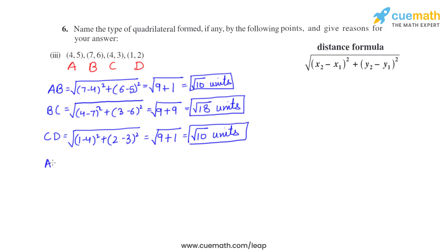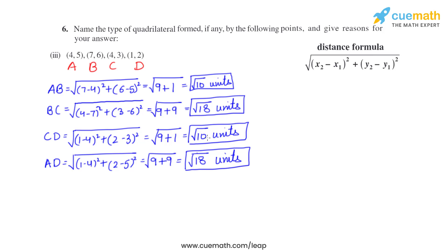For AD: (1 minus 4) whole square plus (2 minus 5) whole square = (−3)² + (−3)² = 9 + 9 = 18, so AD = √18 units. We have two pairs of equal sides: AB = CD and BC = AD. This means it could be a rectangle or a parallelogram. We need to check if the diagonals are equal — equal diagonals means rectangle, unequal means parallelogram.